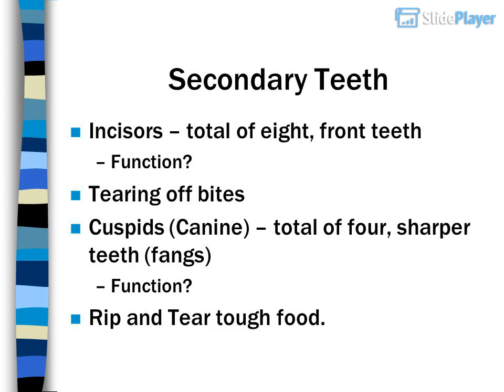Secondary teeth by type: incisors — a total of 8 front teeth — function: tearing off bites. Cuspids, or canines — a total of 4 — sharper teeth, like fangs.